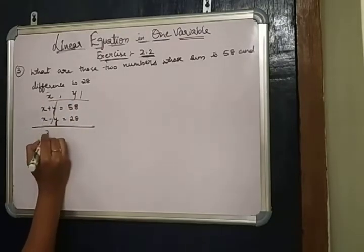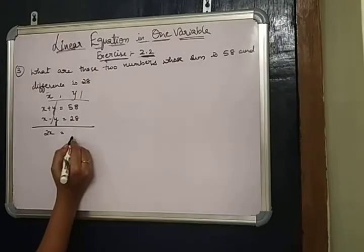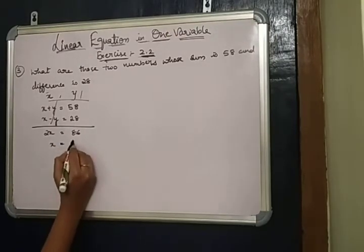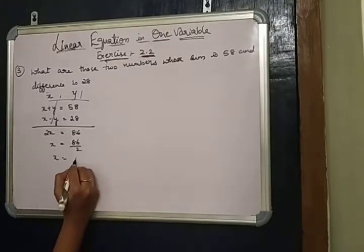Plus Y minus Y get cancelled, so 2X equals 58 plus 28, which equals 86. Where X equals 86 divided by 2, X equals 43.